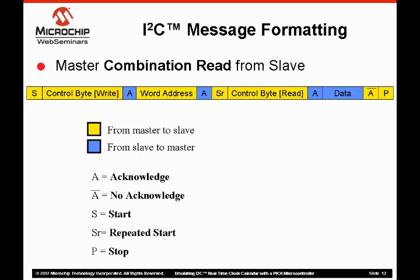After the word address pointer is initialized, a restart condition is sent out over the bus, and a control byte with the read-not-write bit set, indicating a read, is sent out. The slave device acknowledges the matching slave address in the control byte and sends out the data at the word address location written in the first part of the message. When the master acknowledges the reception of data, the slave device increments the word address and sends out the next data byte. But if the master no-acknowledges the reception, no additional data is sent, and the master terminates the transmission with a stop condition. So these are the two basic ways you communicate to an I2C slave device: you can either write to it or read from it with a combination read.